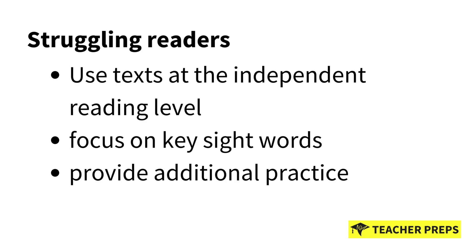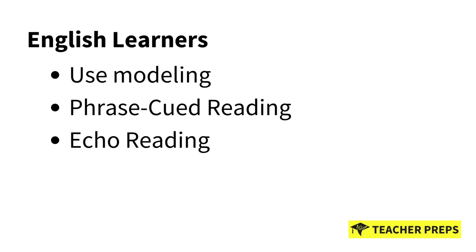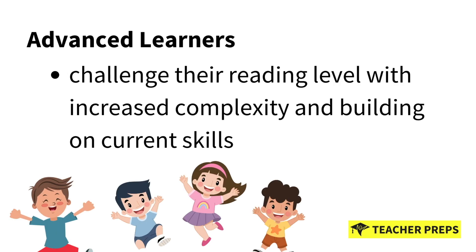For struggling readers, make sure to use texts at the independent reading level, focus on sight words, and provide additional practice. For English learners, use modeling, phrase-cued reading, and echo reading — where the teacher reads a word, phrase, sentence, or page, and then the student rereads that same thing — which helps teach tonal patterns and correct pronunciation. For advanced learners, challenge their reading level with increased complexity and by building on current skills.